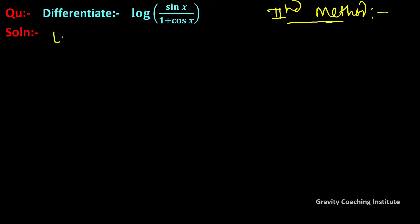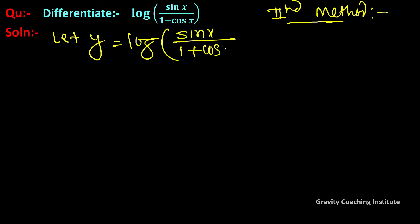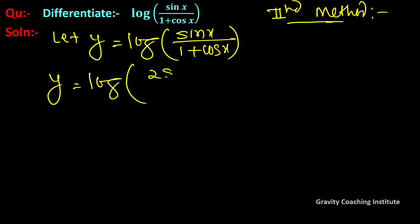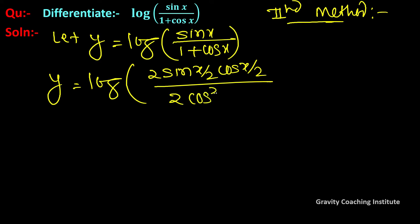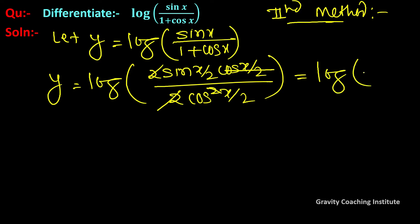Second method. Let y equal to log(sin x / (1 + cos x)). Use half-angle identities: sin x equals 2 sin(x/2) cos(x/2), and 1 plus cos x equals 2 cos squared(x/2). The cos squared(x/2) cancels, leaving log(tan(x/2)).